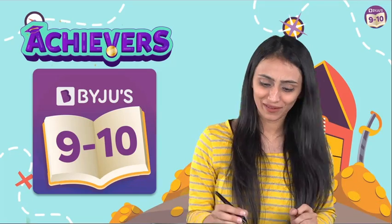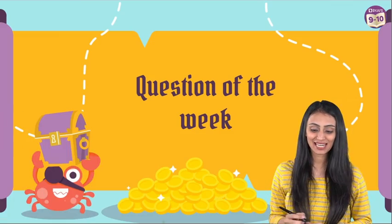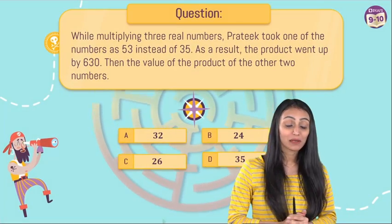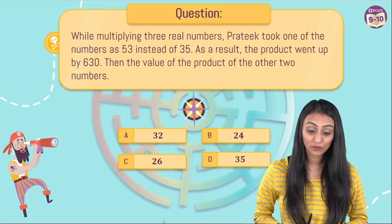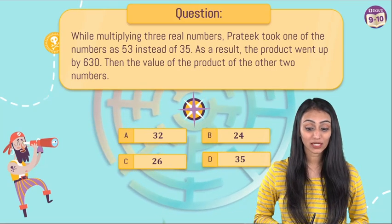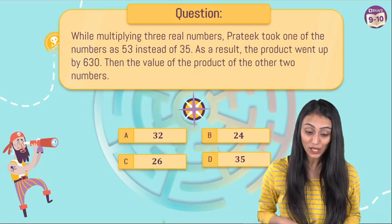Hey students, are you all ready for the question of the week? All right, so let's quickly take a look. While multiplying three real numbers, Prateek took one of the numbers as 53 instead of 35. As a result, the product went up by 630.